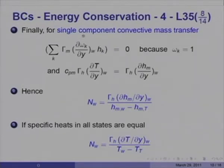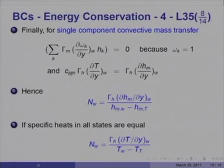Finally, let us look at single-component convective mass transfer. In this case ω_K equals 1, so the first part of the numerator is zero, and C_PM γ_H dT/dy equals γ_H dH_M/dy at W. Hence Nw equals γ_H (dH_M/dy at W) divided by (H_MW minus H_MT), which is again the same form as before.